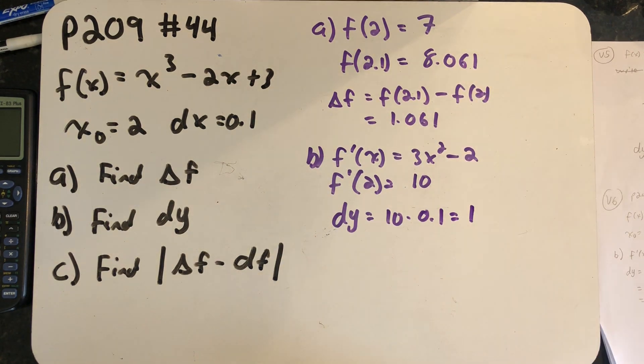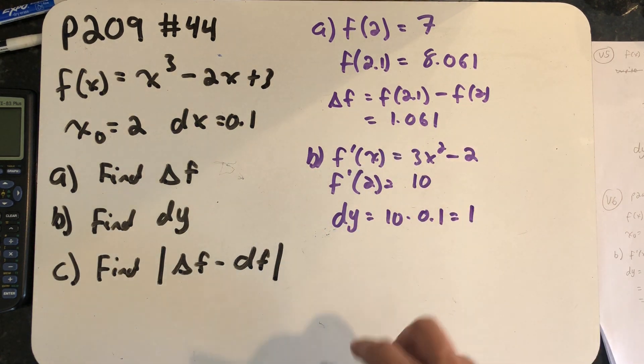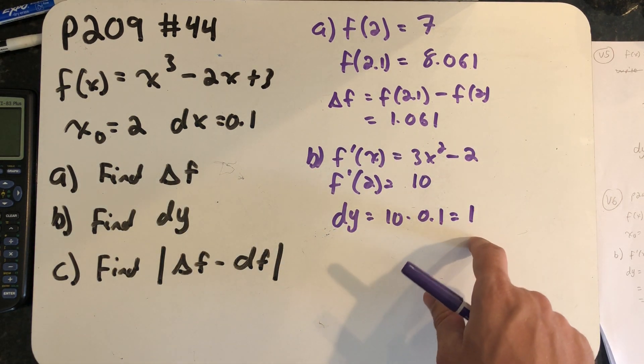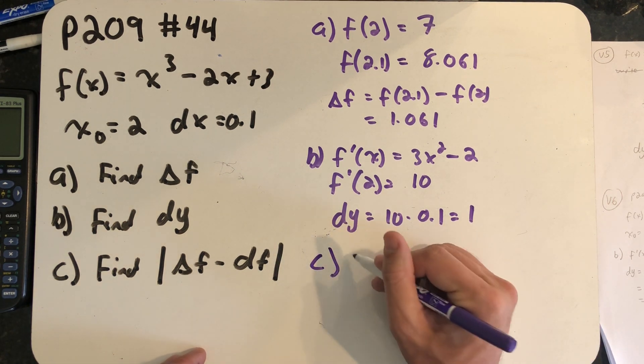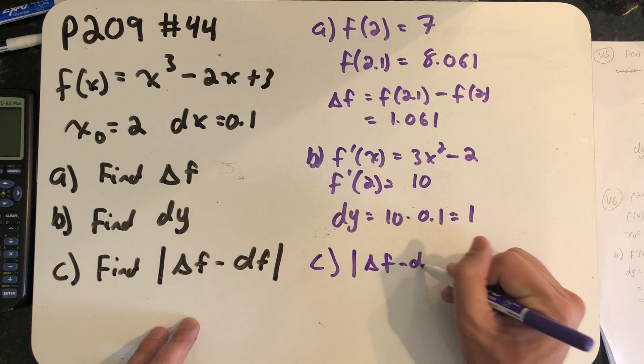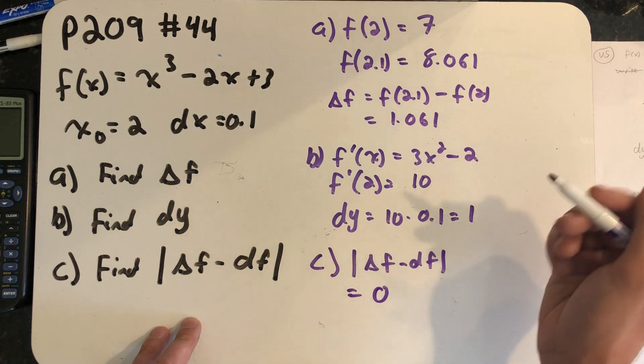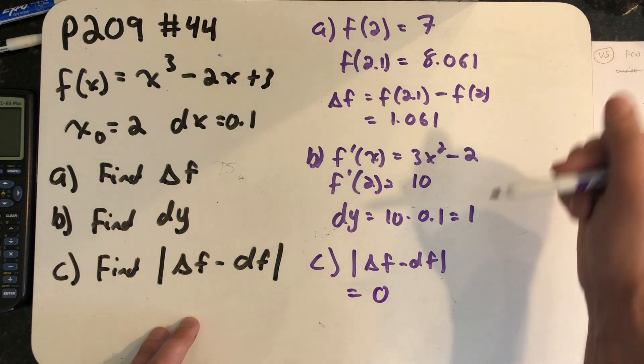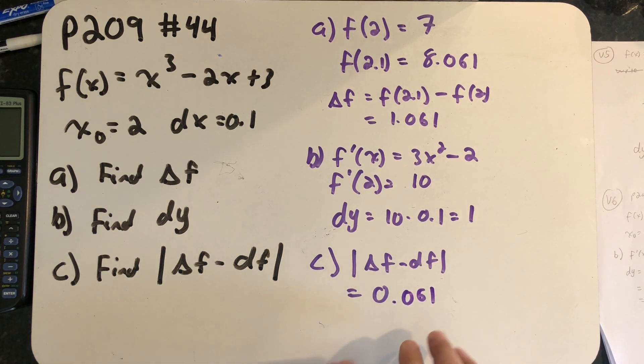The actual change in function value as we change from x = 2 to x = 2.1 is about 1.061. The tangent line only rises one unit. So in part c I compare these two values, what your author has called the approximation error, and I find out that 1.061 minus 1 is 0.061, the difference in the two values. I look at that and say, well that's a very small error.